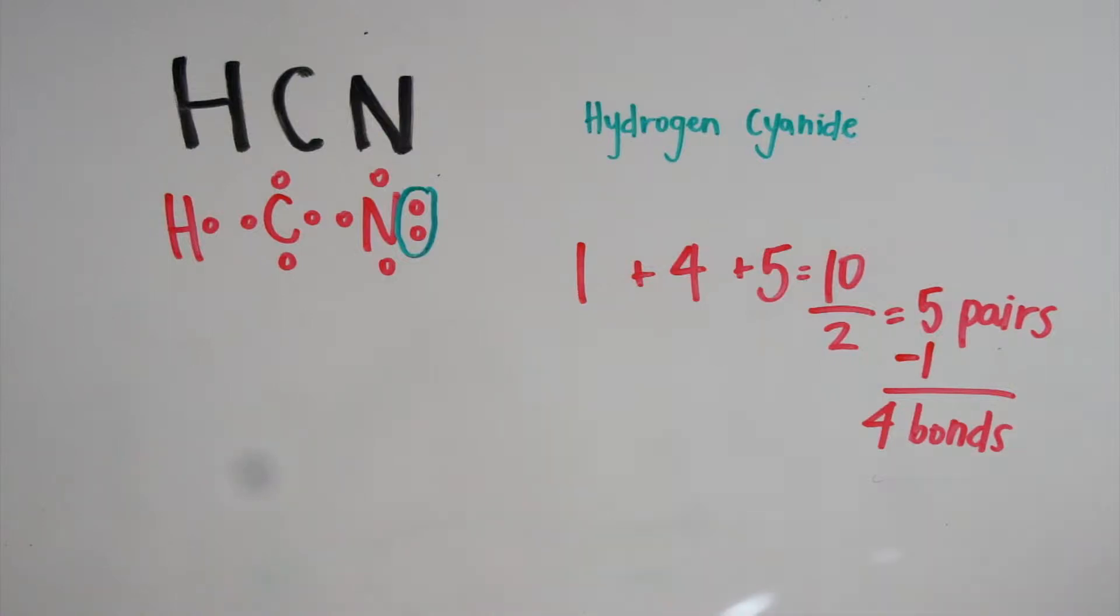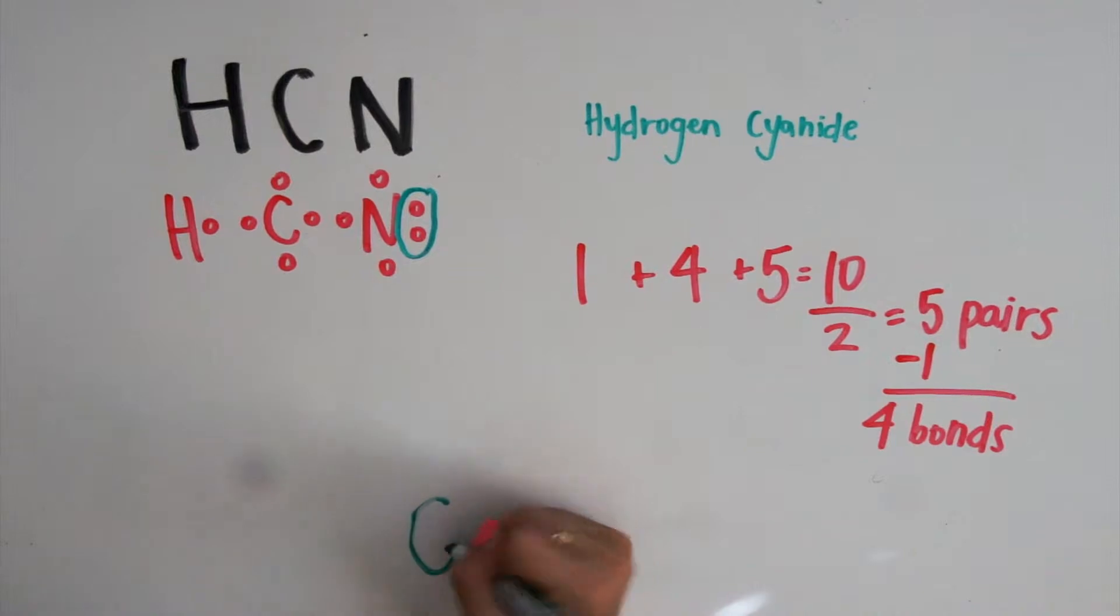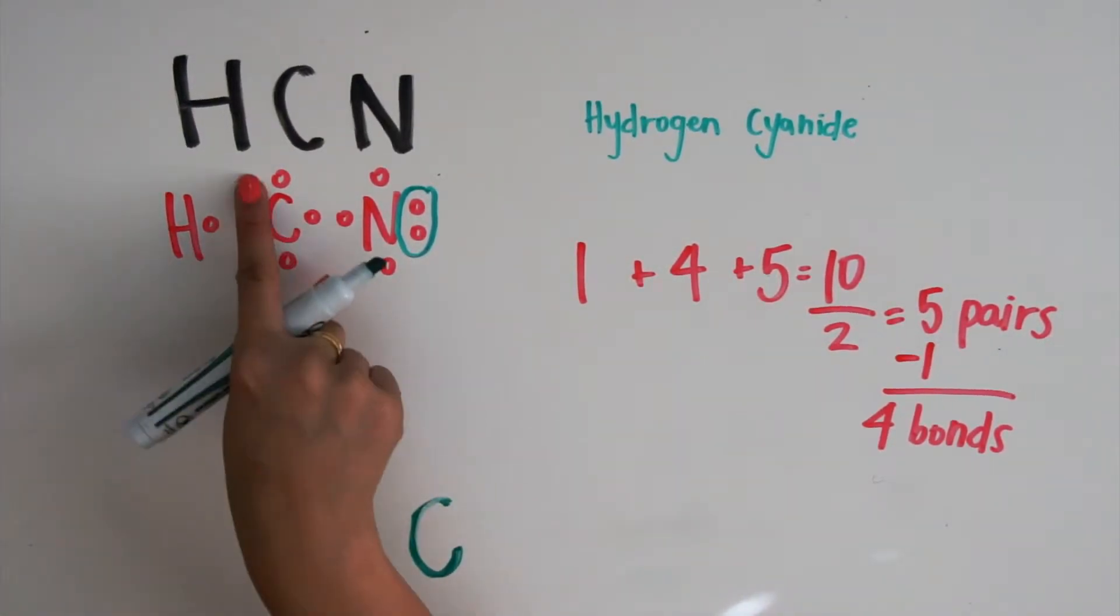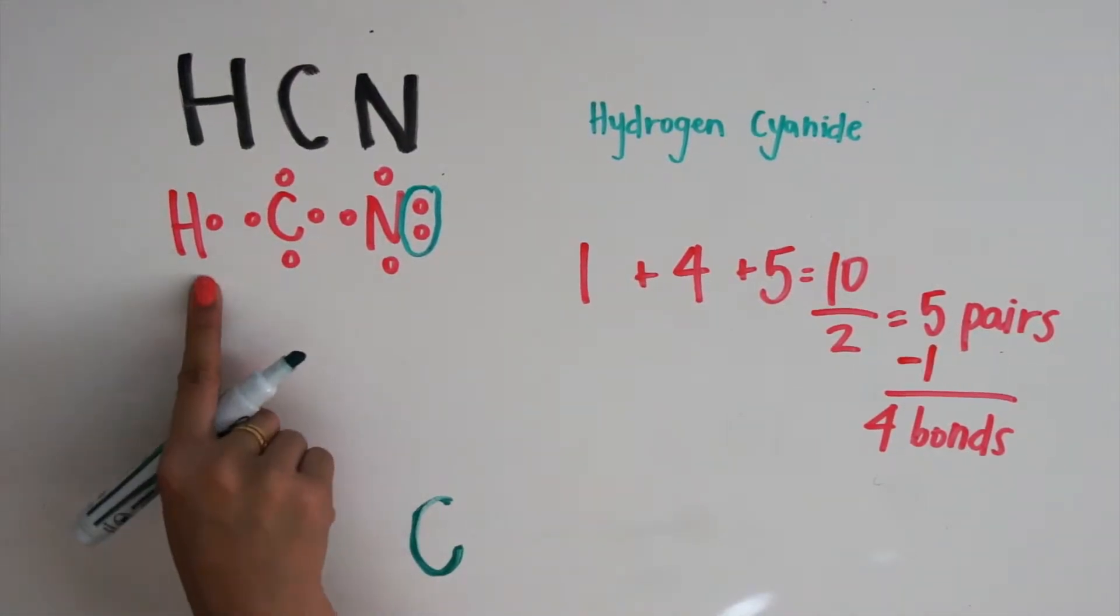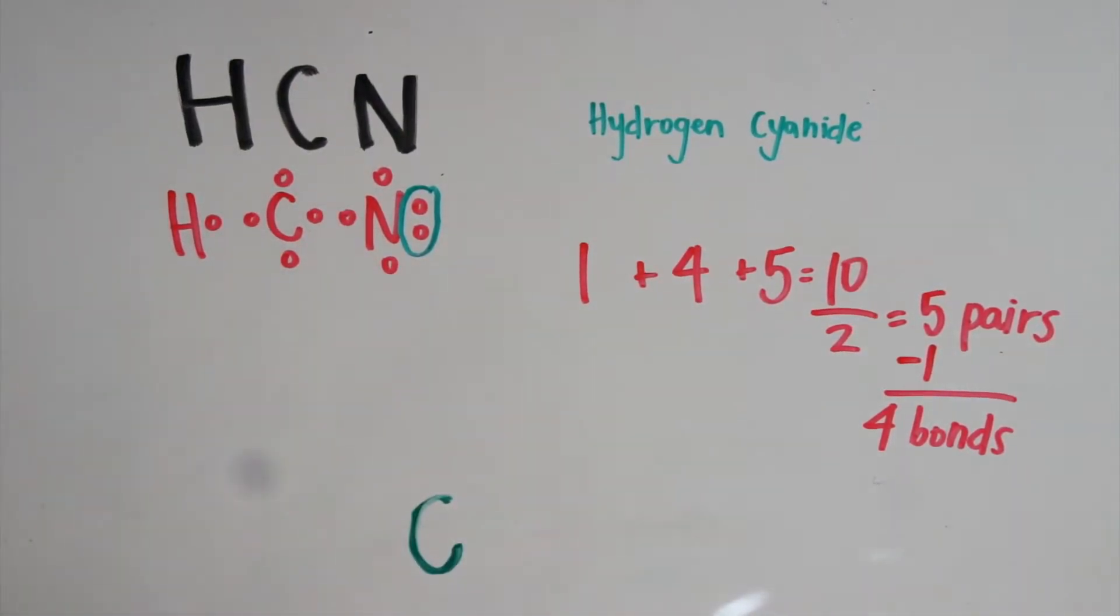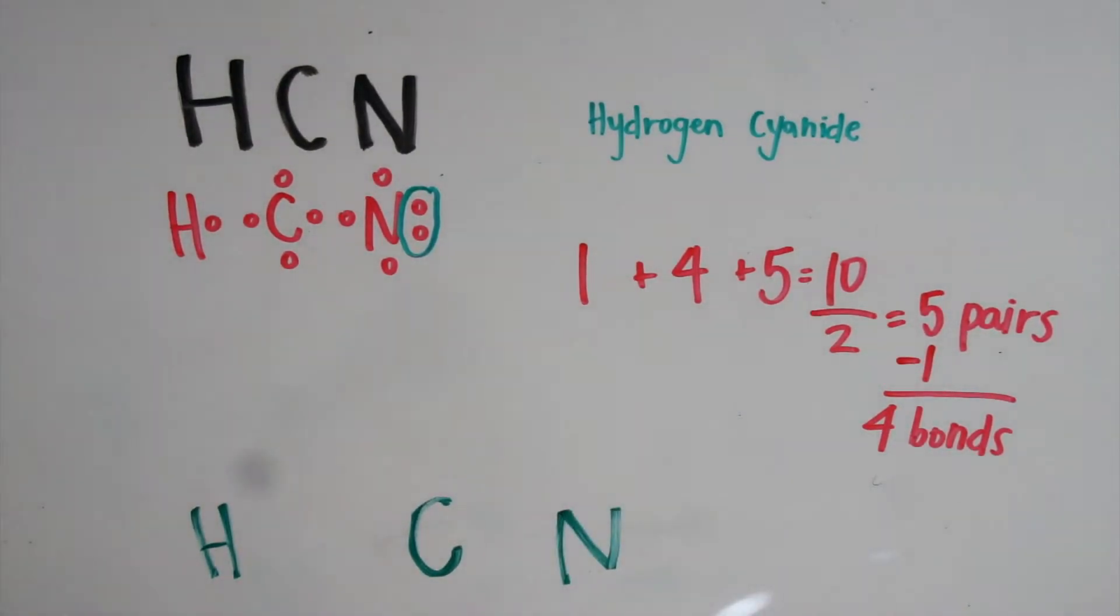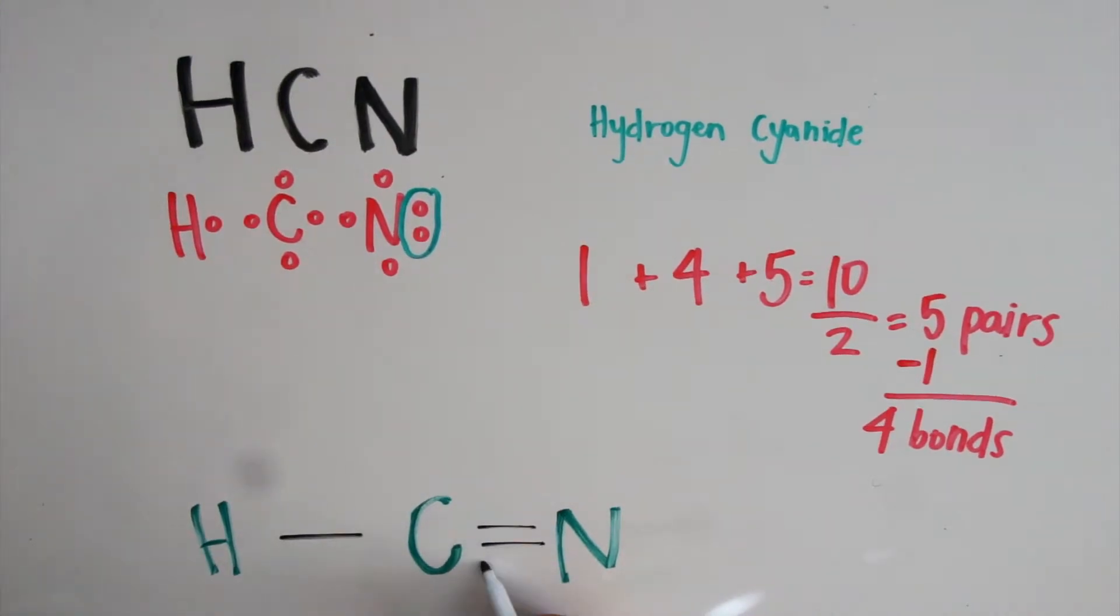You put carbon in the middle because it has the most empty spaces. It has 4 empty spaces, whereas hydrogen only has 1, and nitrogen has 3. Then you write hydrogen and nitrogen next to carbon. Since hydrogen only needs 1, you can satisfy it by creating a bond. Carbon needs 3, and nitrogen needs 3. So you can put down 3 bonds.